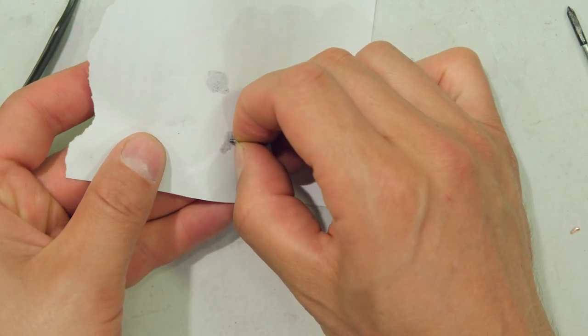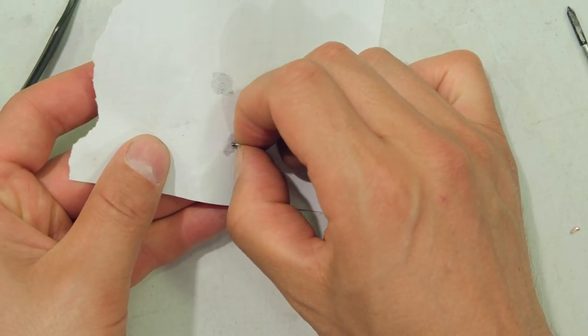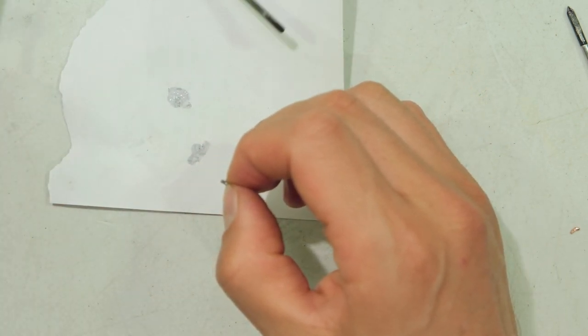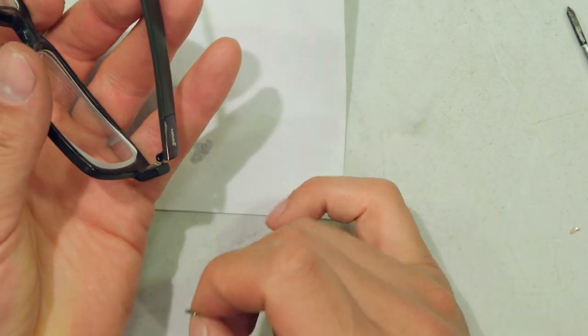I'm just taking the threads of this screw and I'm putting the super glue on the threads. So either you can put it on the threads here or you can put it over here on the threads on this side.